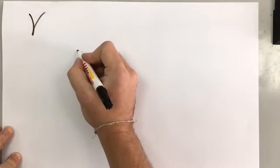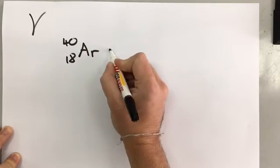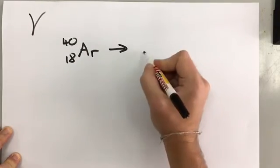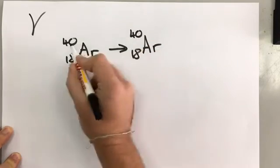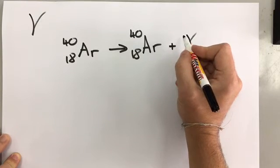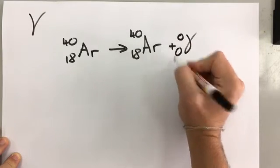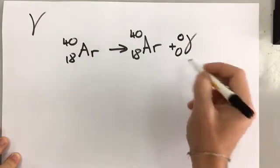For example, you could have argon, and if you were emitting energy, you would still end up with argon. Same numbers, and you would get a gamma zero, zero. And this isn't a particle, this is just a wave of energy.